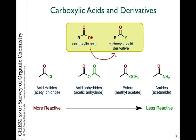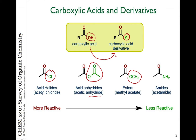Derivatives of carboxylic acids are also very common. They contain a group which is not a carbon or hydrogen and not an OH of a carboxylic acid. These derivatives can include things like halides, such as an acid chloride; an anhydride, which is a combination of two acids joined together with loss of water; an ester, which is an oxygen attached to other carbon groups; or nitrogen compounds called amides. These are the four most common derivatives of carboxylic acids, but certainly not the only ones.